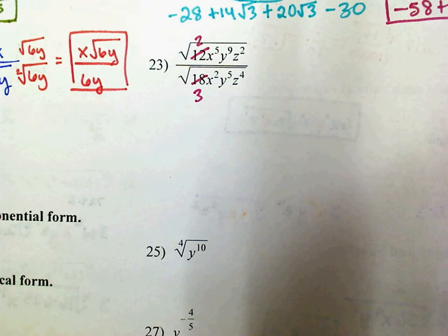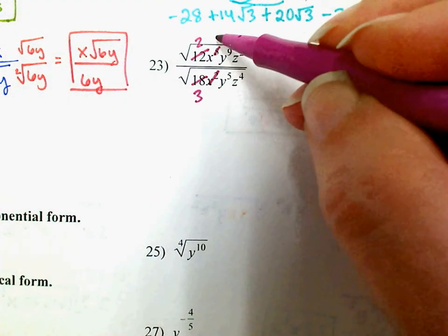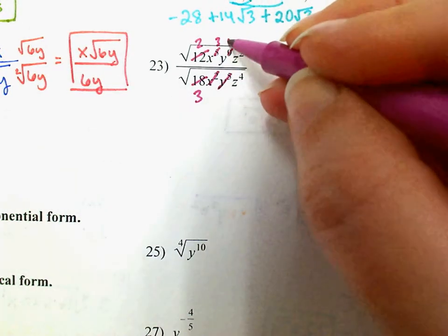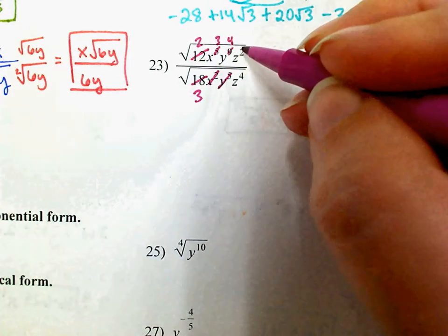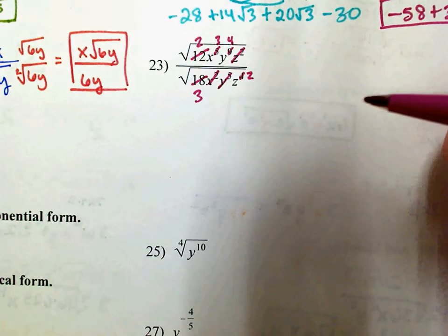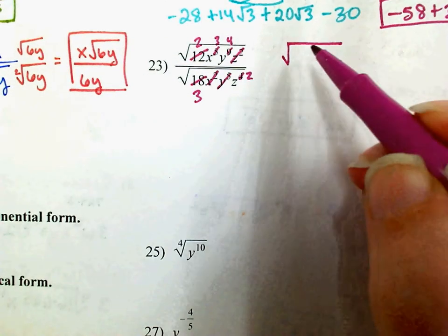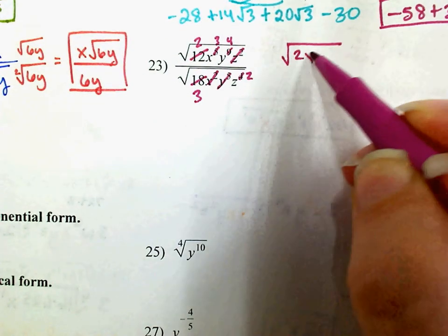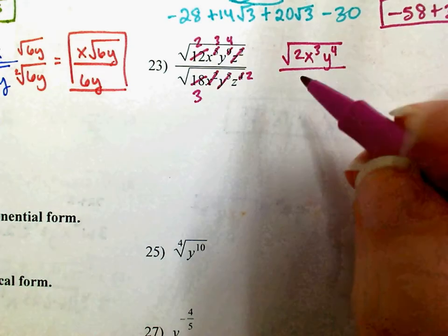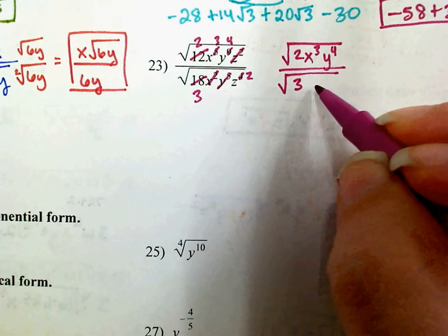I'm going to cancel out however many x's I can. 2 x's from the denominator with 2, leaving me with 3 in the numerator. 5 of these with 5 of those leave me with 4, and 2 of those with 2 of those leave me with 2. So what I'm actually simplifying is the square root of 2x cubed y to the 4th over 3, the square root of 3, z squared.